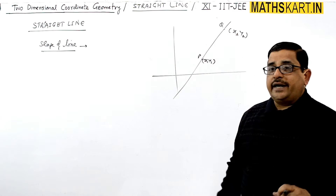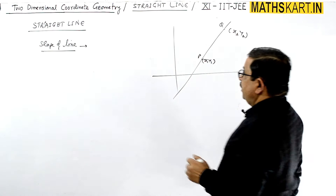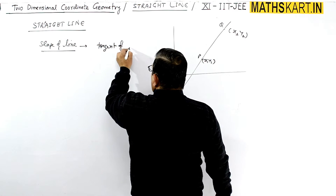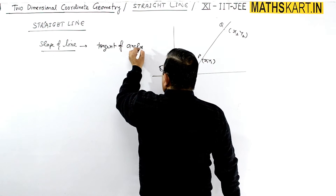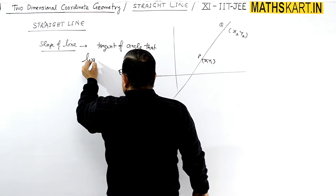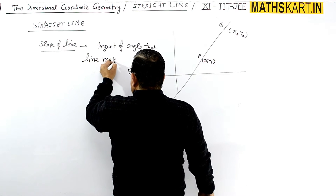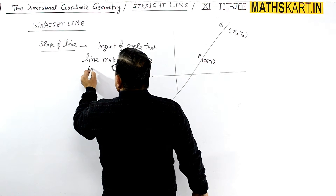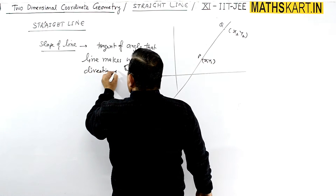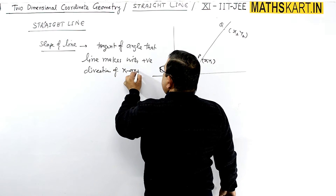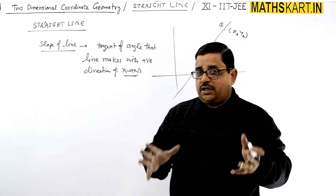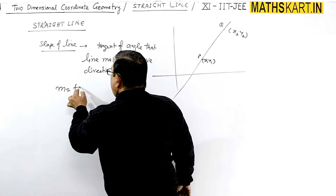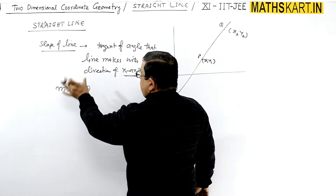The slope is the tangent of the angle that the line makes with the positive direction of the x-axis, measured in the anticlockwise direction. So slope equals tan(θ).